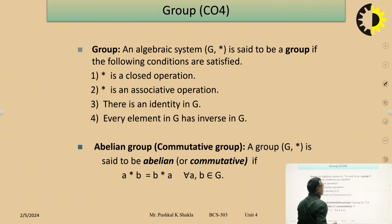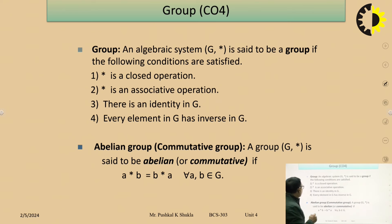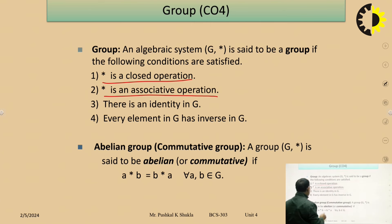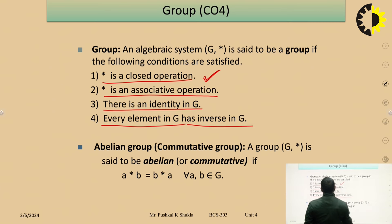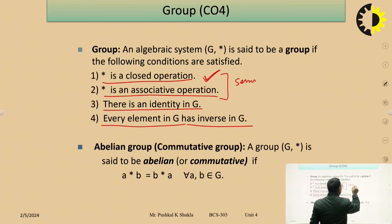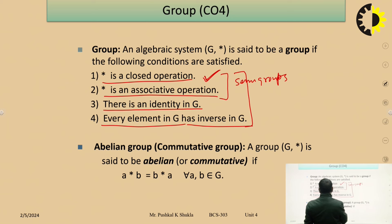A group: an algebraic system (G, star) is said to be a group if it satisfies four conditions. First, star is a closed operation. Second, star is an associative operation. Third, there is an identity element in G. Fourth, every element in G has an inverse in G. The first two properties are required for semi-groups, the first three for monoids, and all four for a group.